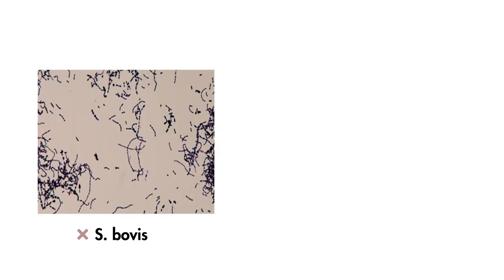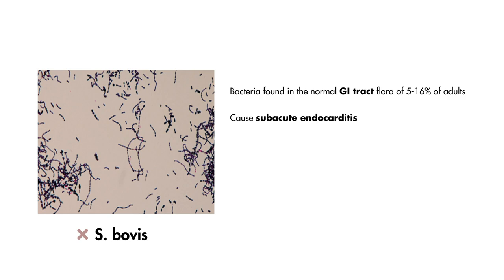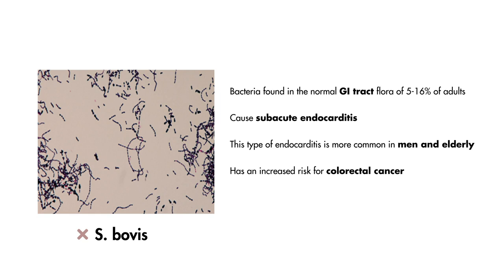Streptococcus bovis is a rare cause of subacute endocarditis. It is found in the normal GI tract flora of 5–16% of adults. Typically, this type of endocarditis is more common in men and the elderly, and these types of infections also have an increased risk for colorectal cancer.